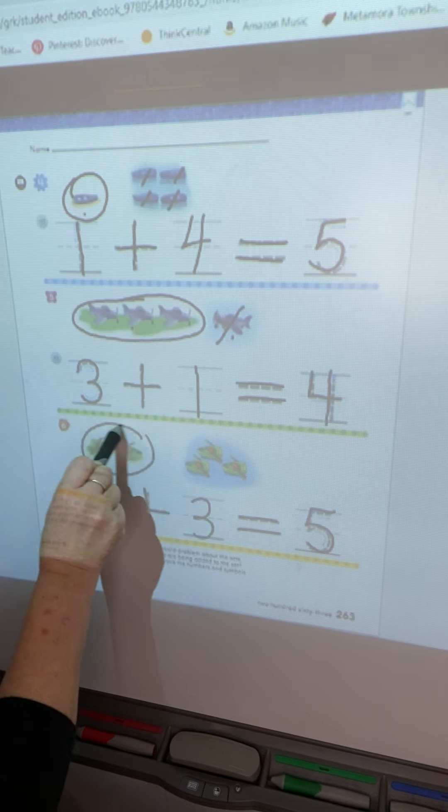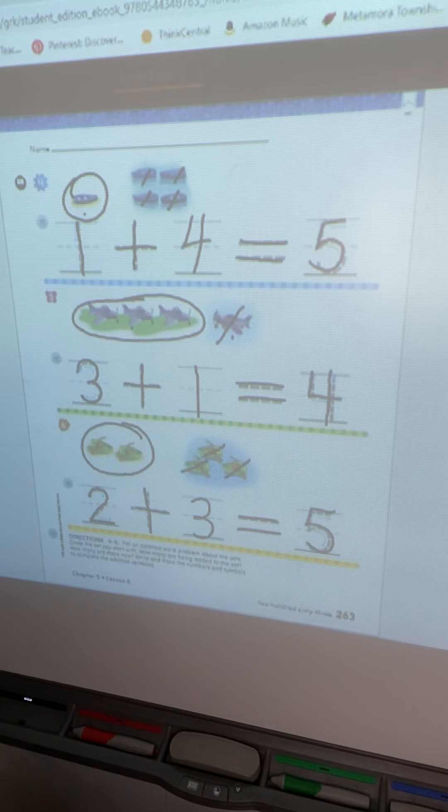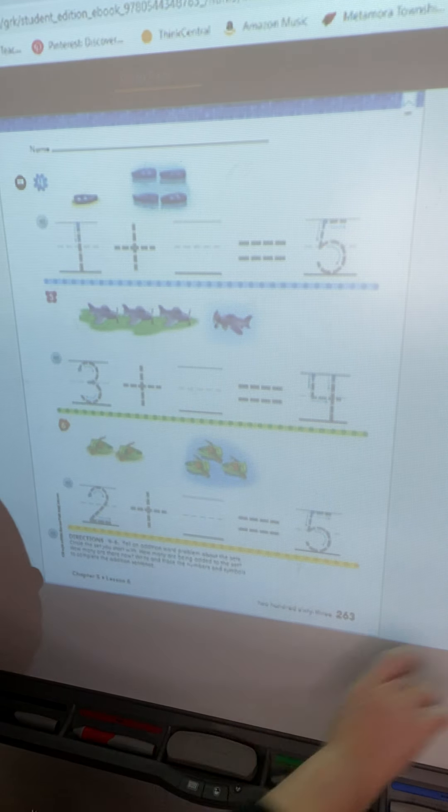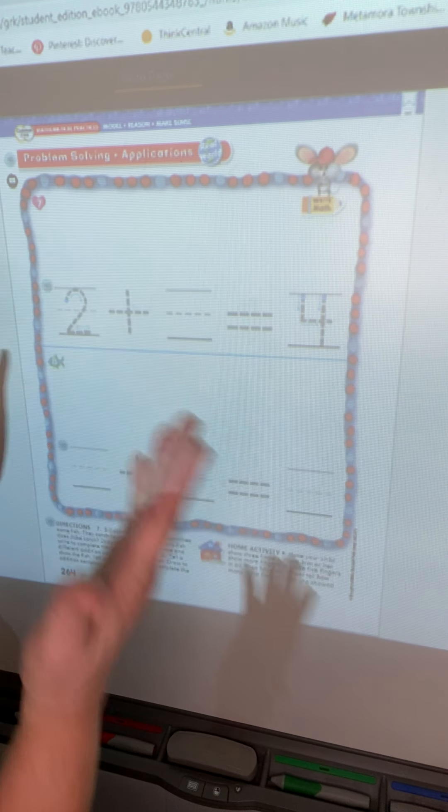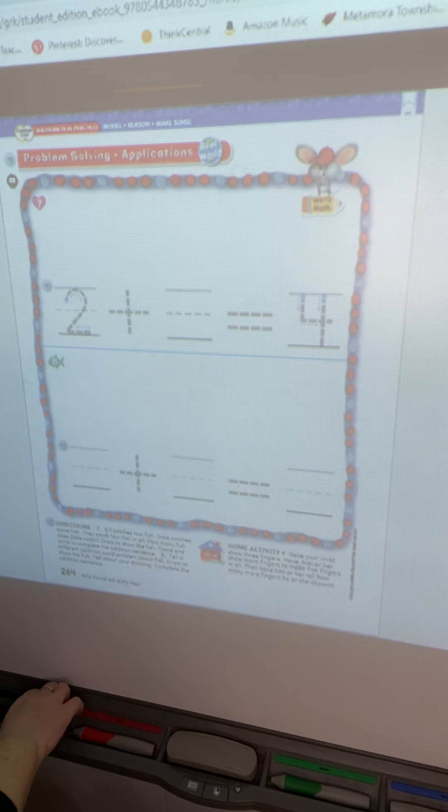Number six. These look like some rowboats. Have you ever been in a rowboat before where you have to use your arms to paddle the boat? We are starting with two boats. So go ahead and trace that two. And trace your symbol plus. Two plus. Some more. How many boats are here in the lake? Yes, there are three. So go ahead and put three. Two plus three equals five. Let's double check. Start with two. So two, three, four, five. Two plus three equals five.